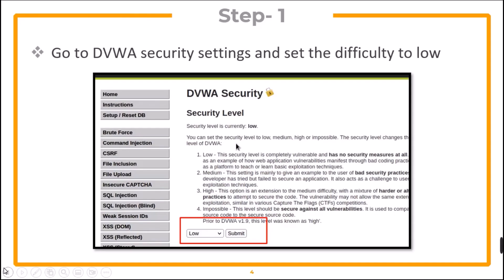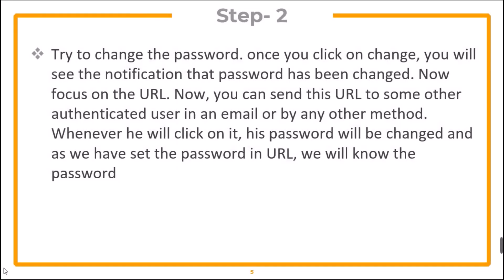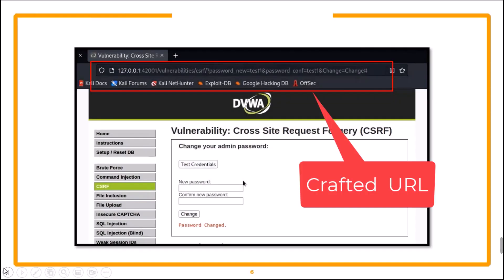Try to change the password. Once you click on change, you will see the notification that the password has been changed. Now focus on the URL. You can send this URL to some other authenticated user in an email or by any other method. Whenever he clicks on it, his password will also be changed. Since we have set the password in the URL, we will know the password. The URL remains constant among different users, so whoever executes it, his password gets changed.